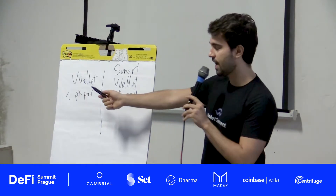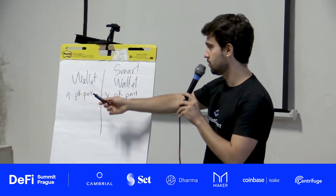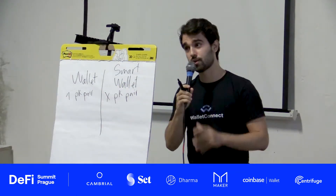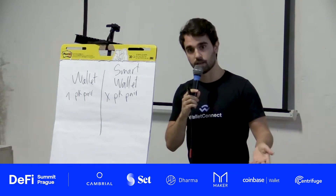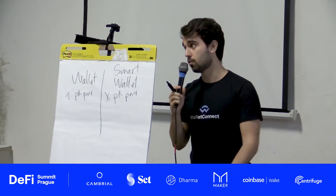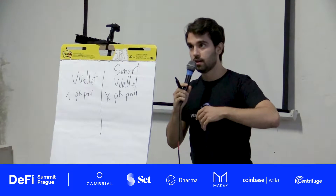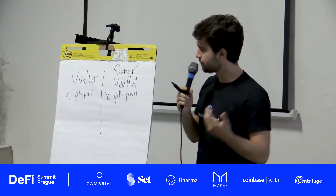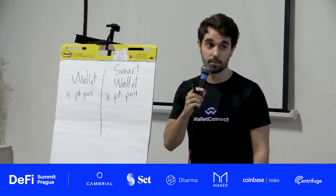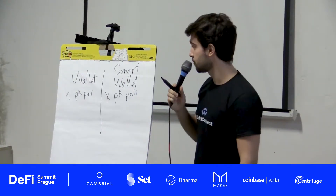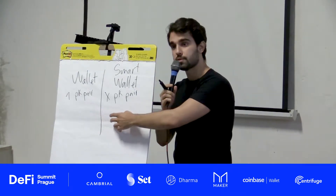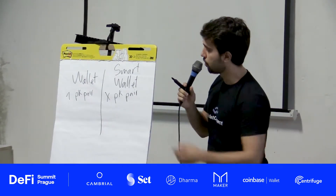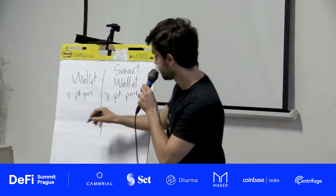How can we break or change the rules of cryptography with smart wallets? This involves building on Ethereum specifically with smart contract-based wallets. Instead of having the public and private key representing your wallet, you actually have a smart contract. This is the significant difference: a normal account is a key pair, while a smart wallet is a contract.